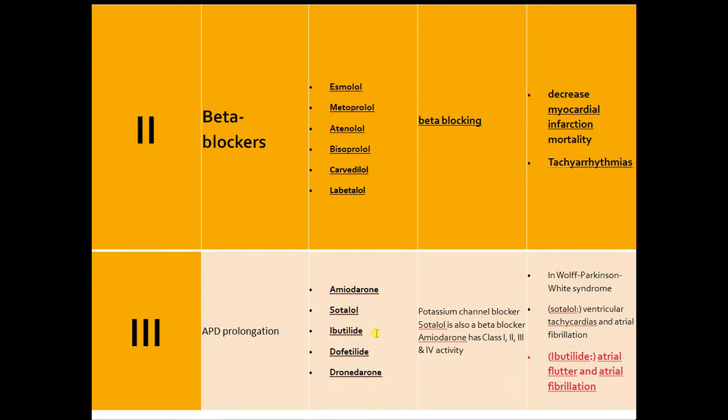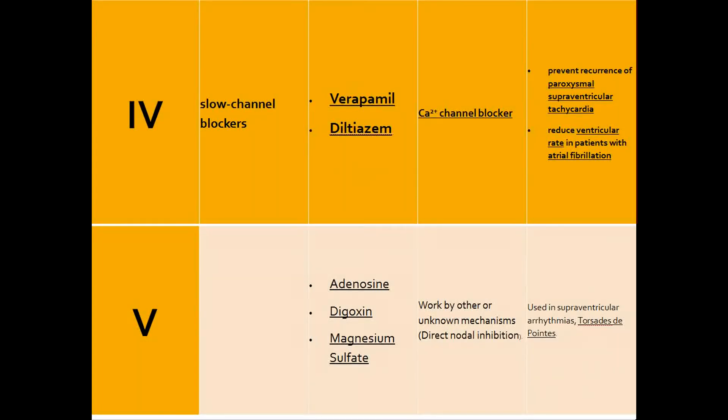Class 4 includes calcium channel blockers: verapamil and diltiazem. As the name implies, it blocks calcium channels. Once again used for both supraventricular tachycardias as well as ventricular arrhythmias.